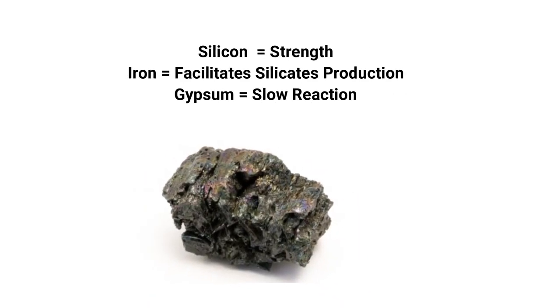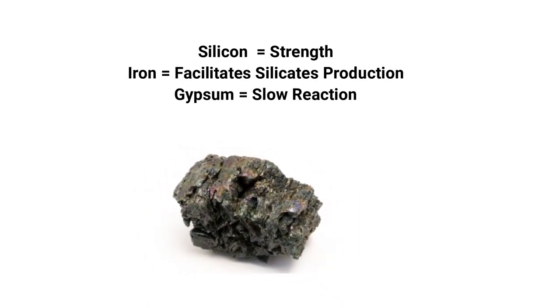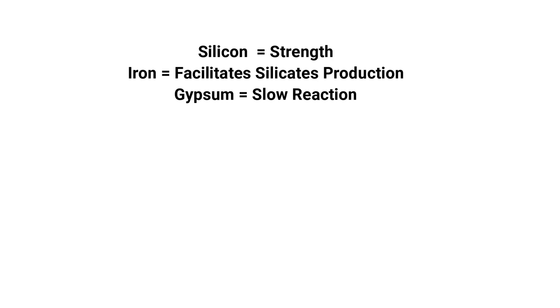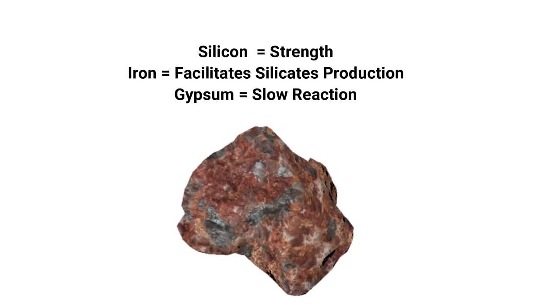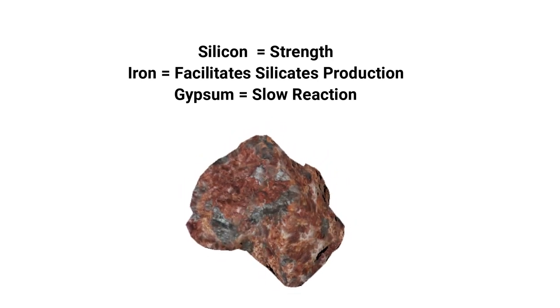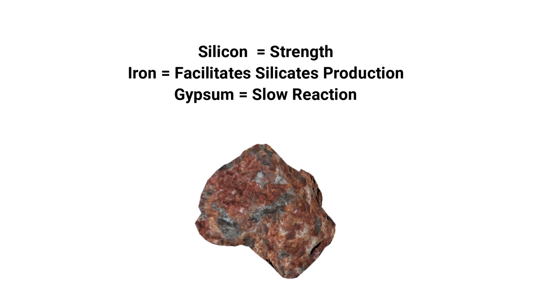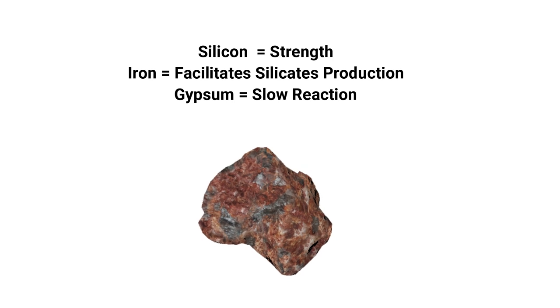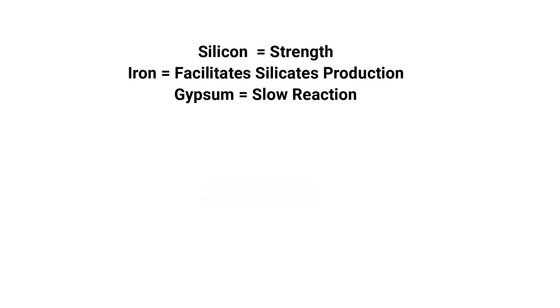Iron in the iron ore combines with calcium and aluminum to produce a product that facilitates the formation of calcium silicate. It also provides the grayish color that you see in the cement.